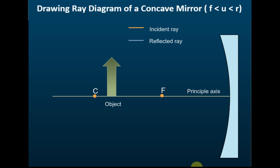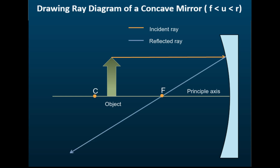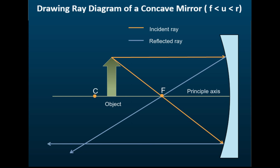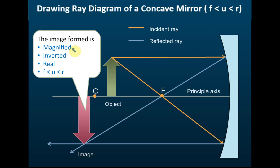This is the case where the distance of the object is between f and c. Using rule one — parallel to the principal axis, passing through the principal focus — and rule two — passing through the principal focus, reflected parallel — we locate the image. The image is in front of the mirror, so it is real. The image formed is magnified and inverted.